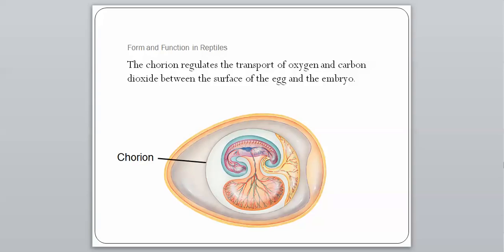The chorion regulates the transport of oxygen and CO2 between the surface of the egg and the embryo. Even though the embryo is inside the egg, it still needs to breathe — it takes in oxygen and gives off CO2. This bubbly layer called the chorion helps get oxygen in and take CO2 out. These are really advanced structures just inside of an egg.